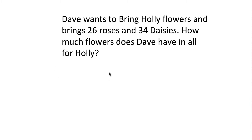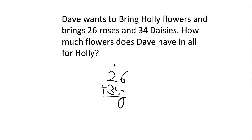So let's add it: 26 flowers plus 34 flowers. 6 plus 4 is 10, so we put 0 here and carry the 1. Since the 1 is part of this row, we can add it: 1 plus 2 is 3, and 3 plus 3 is 6. So we put 6 here, and it's 60 flowers in total.